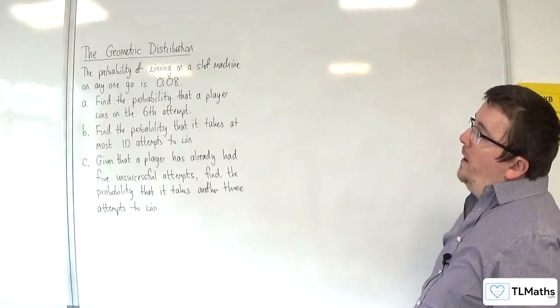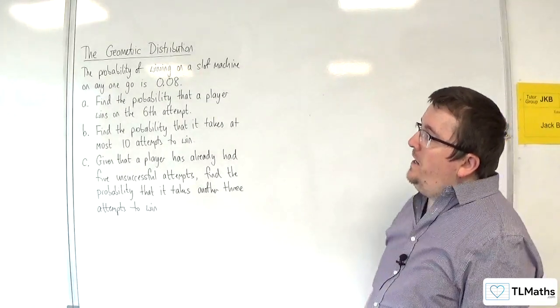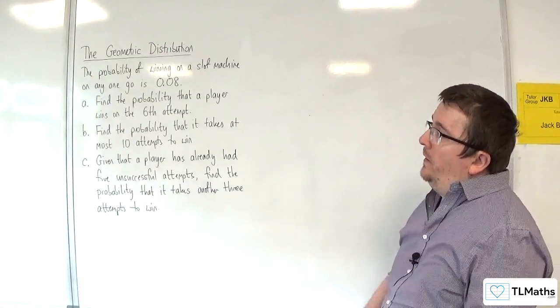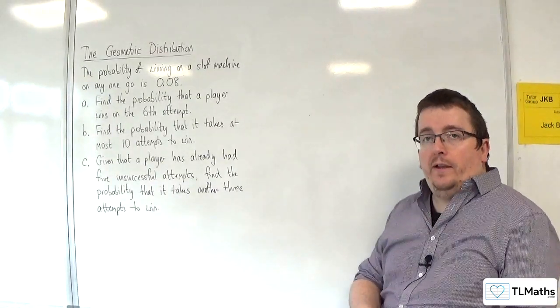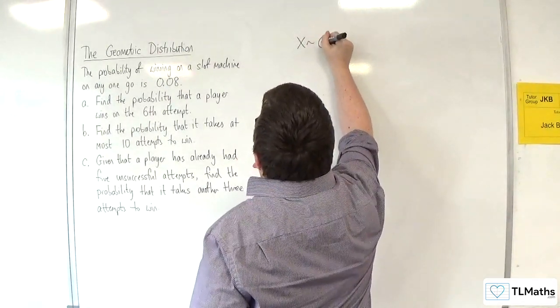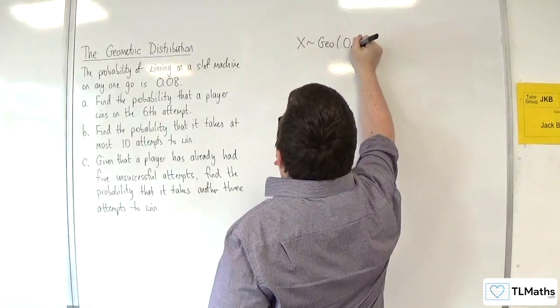In this problem, we've got the probability of winning on a slot machine on any one go is 0.08. Part A, find the probability that a player wins on the sixth attempt. So, we are working with a geometric distribution with a probability of 0.08.